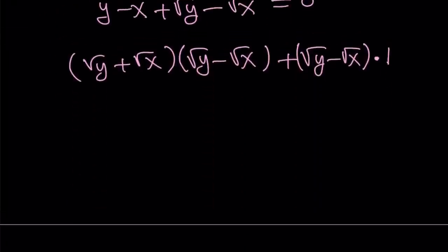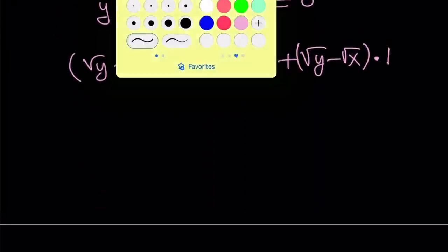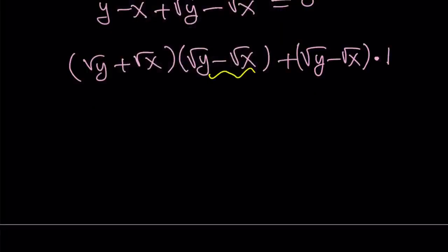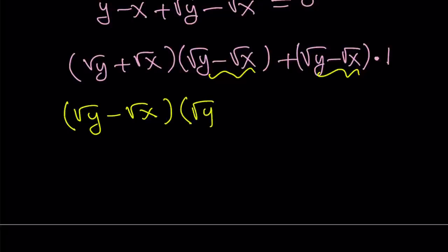Now we have a common factor: square root of y minus square root of x. We can take it out. When we do, remember that every quantity is well-defined. We get square root of y minus square root of x, times the quantity square root of y plus square root of x plus 1. And the whole thing is equal to 0.